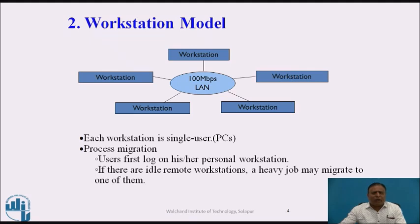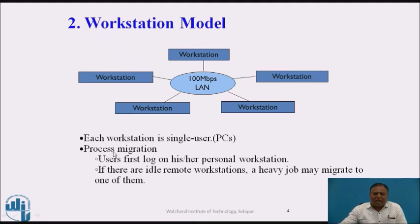The second model is the workstation model. In this model, different workstations are interconnected with each other by using a communication network so that each workstation can share hardware and software resources. Each workstation is a single-user PC. Process migration can take place here — if any node is overloaded or does not have sufficient processing power, that work or execution is migrated to another workstation which has higher processing capability and is in an idle state. Process migration is the main advantage of this workstation model.